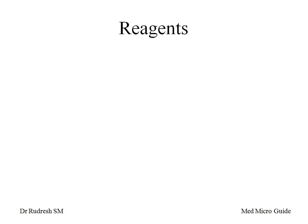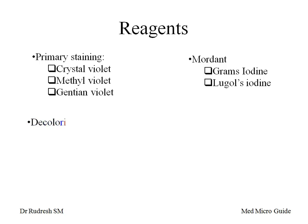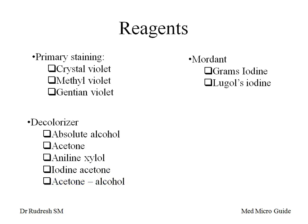Let's see the reagents used in Gram staining. There are four different chemicals used in four different steps. The first step is primary staining — we can use crystal violet, methyl violet, or gentian violet as a primary stain. We can also use Lugol's iodine in certain modifications. The third step is decolorization. The most commonly used decolorizer is absolute alcohol, followed by acetone, aniline xylol, iodine acetone, and acetone-alcohol mixture.